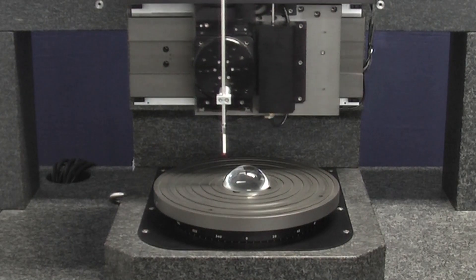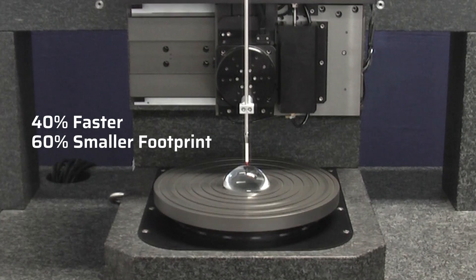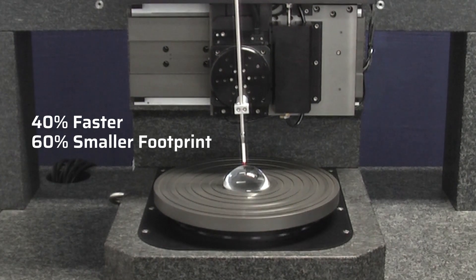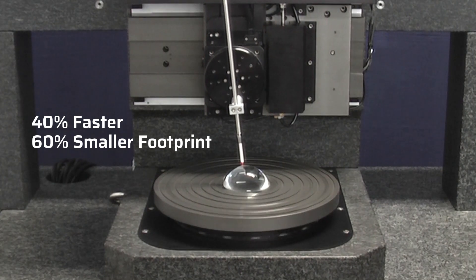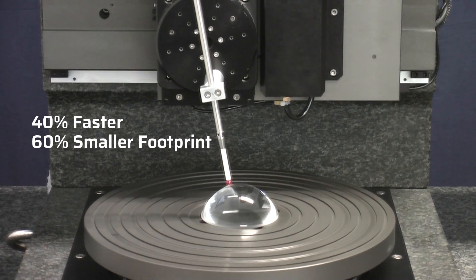So we developed the Surface Measurement Motion Platform, or SMP as we call it. The SMP helps our users save up to 40% measurement time with a 60% smaller machine footprint.